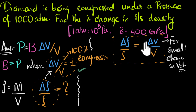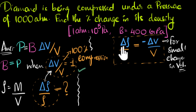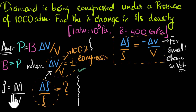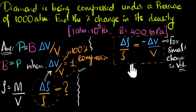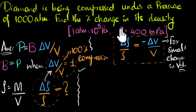There will be a negative sign in this relationship, and the reason is that if delta V is positive — meaning volume increases — then the density will decrease. There's an inverse relationship: if one increases, the other decreases. But as far as the magnitude goes, the percentage changes are exactly the same. So we just need to calculate delta V over V, and then we know delta rho over rho.